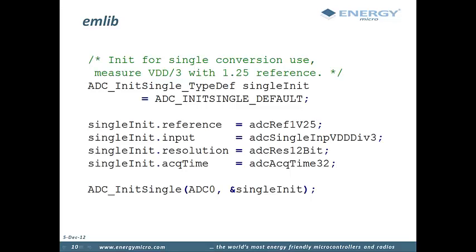That is it for the CMSIS part. Now we will move on to talk about the peripheral library EMlib. EMlib abstracts away direct register manipulation. The application interface when using EMlib consists of functions and init structs. By using EMlib the code for controlling the peripherals can be made simpler and more readable. A typical way to configure a peripheral on the EFM32 is to fill an init struct and then pass a pointer to this struct to the corresponding init function.